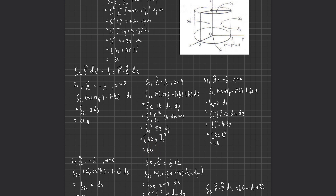For S3, the normal is negative j and y equals 0 since it is located at zero. Performing the dot multiplication gives negative 2. With x from 0 to 2 and z from 0 to 4, we get an answer of negative 16.